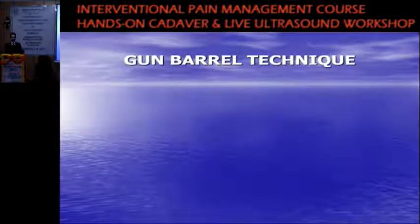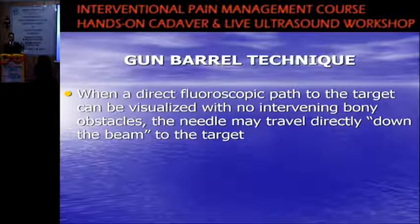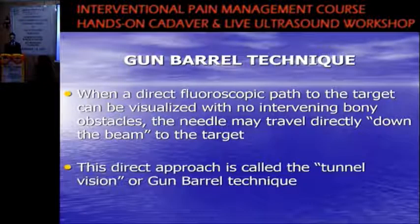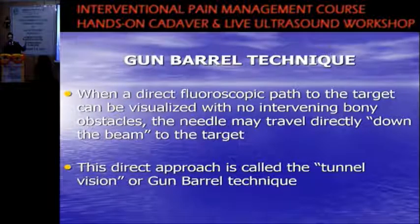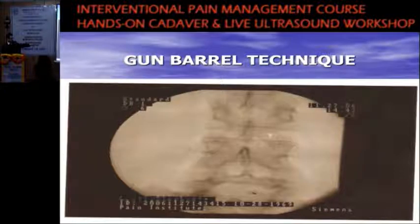The second key technique is the gun barrel technique, also called tunnel vision. When a direct fluoroscopic path to the target exists with no intervening bony obstacles, the needle may travel directly down the beam to the target. Orient the fluoroscope so it is looking directly into the needle — you should see only the hub of the needle, not the full shaft. An example is placing a needle into the L5-S1 interspace oriented along the fluoroscope beam. Use the fluoroscope as your third eye.